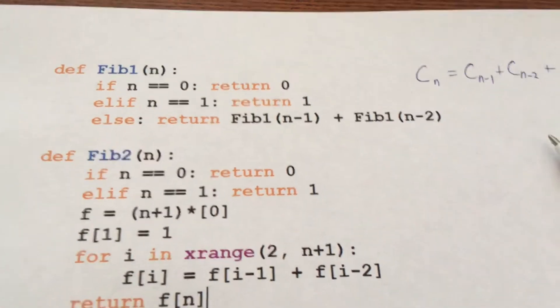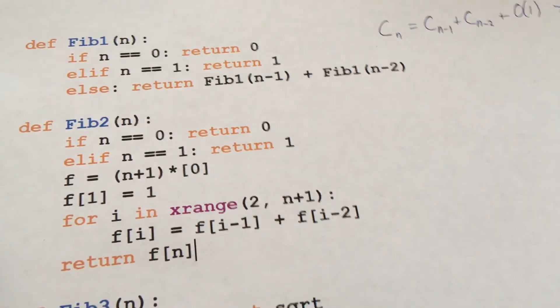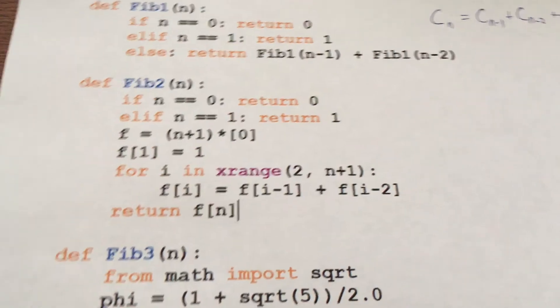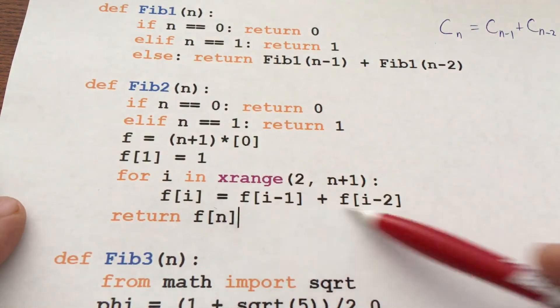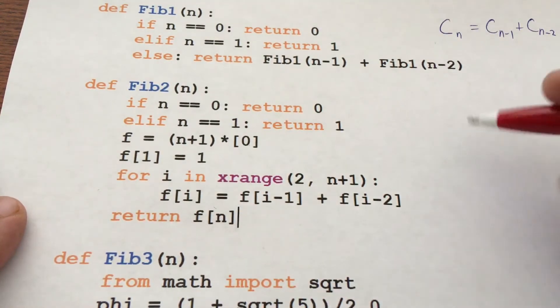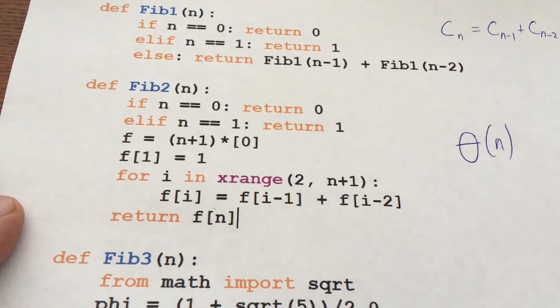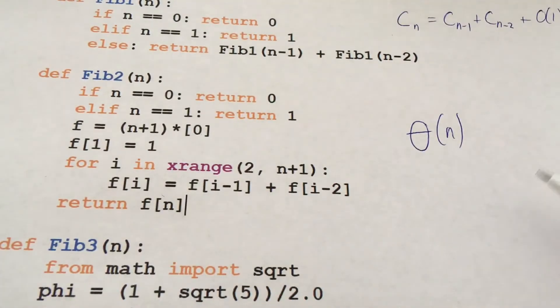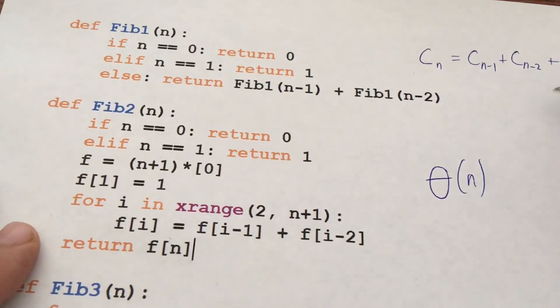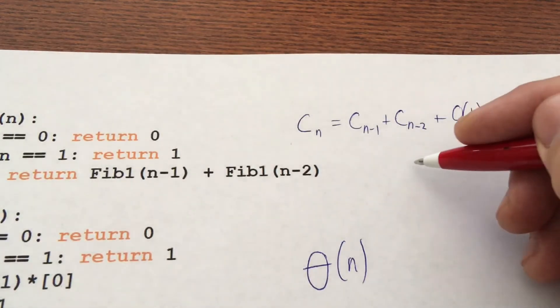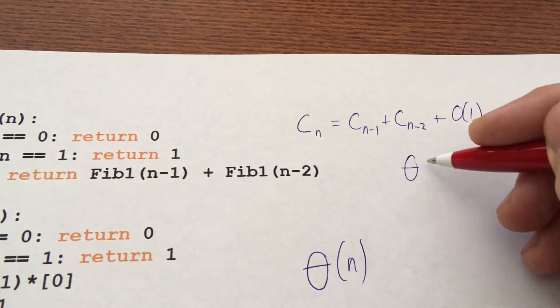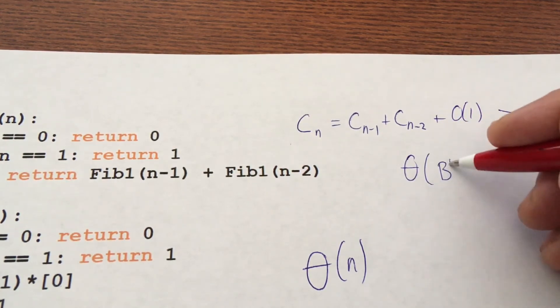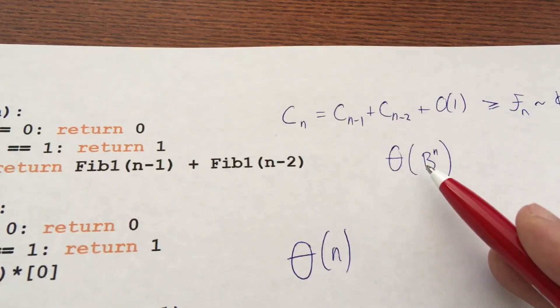So now if we go to this next array version, this one is just constructing an array of length n and then filling it in. So its computational complexity is just proportional to the nth number we asked for. So the first one, we know it's going to be something exponential. We don't know what the base is, but it's exponential.